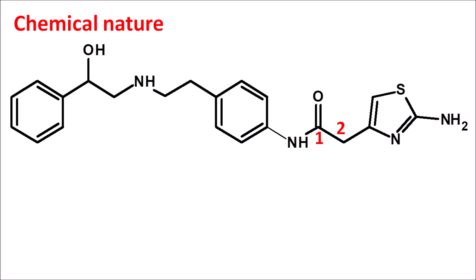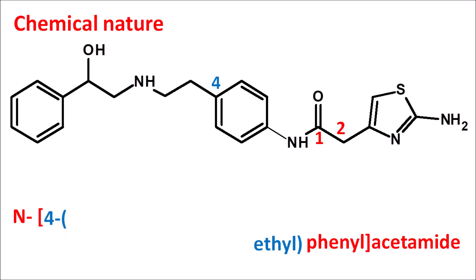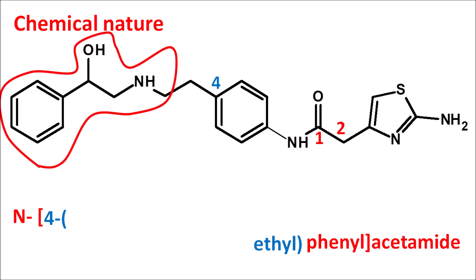This acetamide is attached to a phenyl ring on the nitrogen, so we can write this as N-phenyl acetamide. At the fourth position of this phenyl ring, an ethyl side chain is attached — so '4-ethyl.' At the second position of this ethyl chain, an additional group is attached, which is a phenylethylamine derivative.